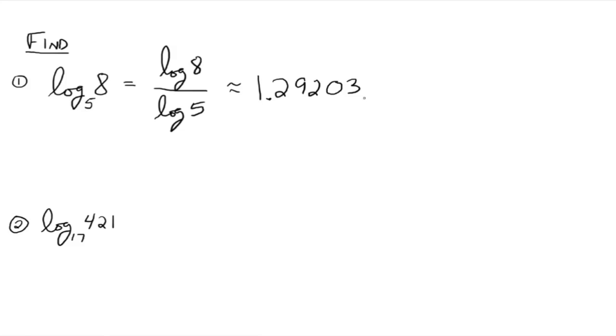Okay, what's that decimal number? 1.29203. I rounded it off. It does continue on there forever. All right, so that's the number on your calculator.